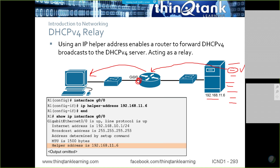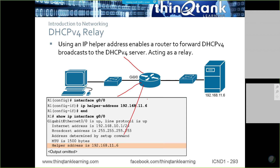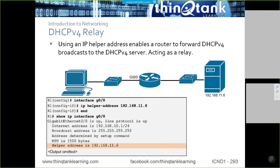If the router has multiple interfaces, you would have IP helper-address on each of those interfaces, all pointing to the same server, and the server would respond accordingly. This means you can have one or two DHCP servers for your entire enterprise, and those servers can be anywhere as long as they're reachable by the router.